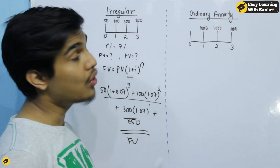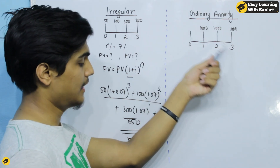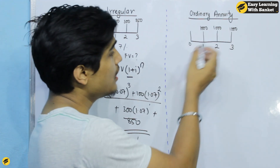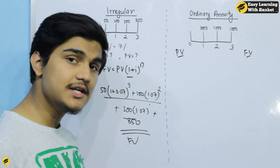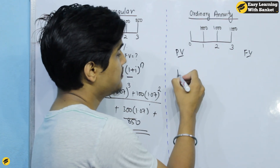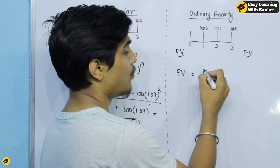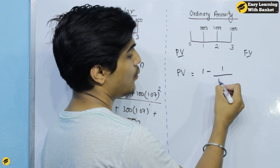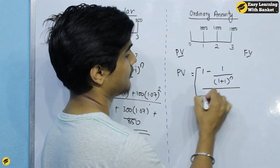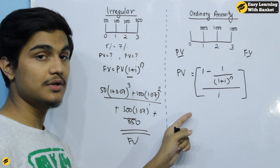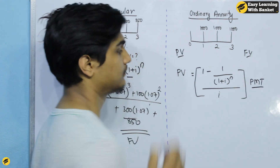Now let's go to the ordinary annuity. The ordinary annuity has payments at the end: year 1, year 2, year 3. The present value formula for ordinary annuity is: PMT times [1 minus 1 upon (1 plus i) to the power n], all divided by i.